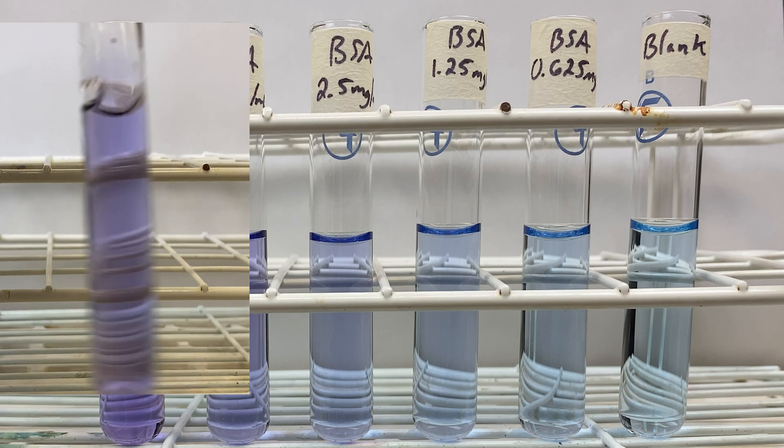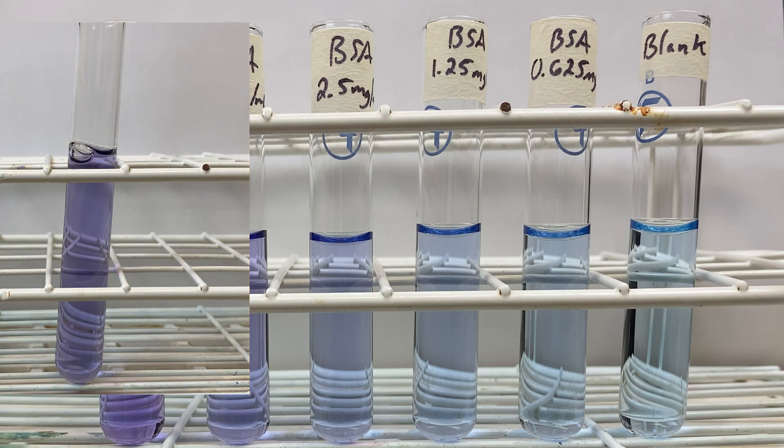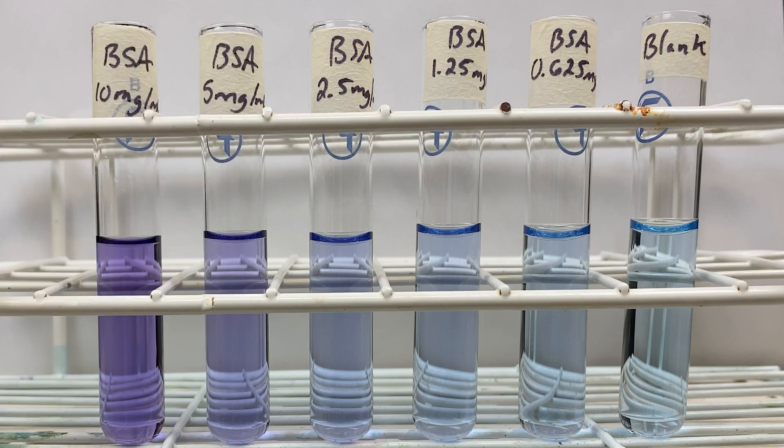The standards we will use today are BSA, bovine serum albumin. It is a protein found in cow serum. We have diluted down samples from 10 milligrams per mL all the way down to 0.625 milligrams per mL as our standards.